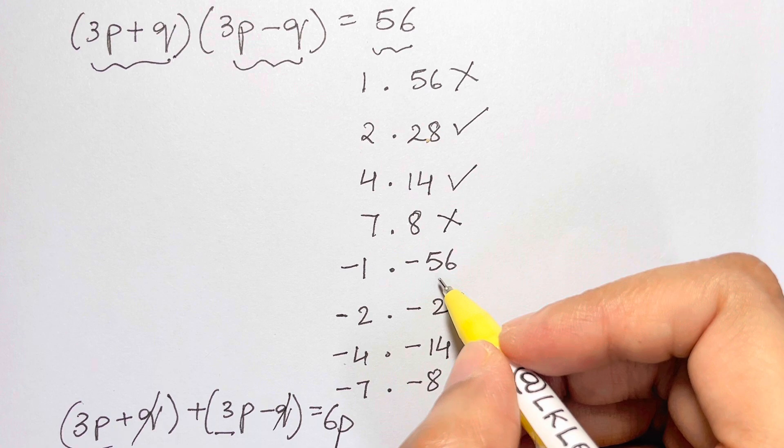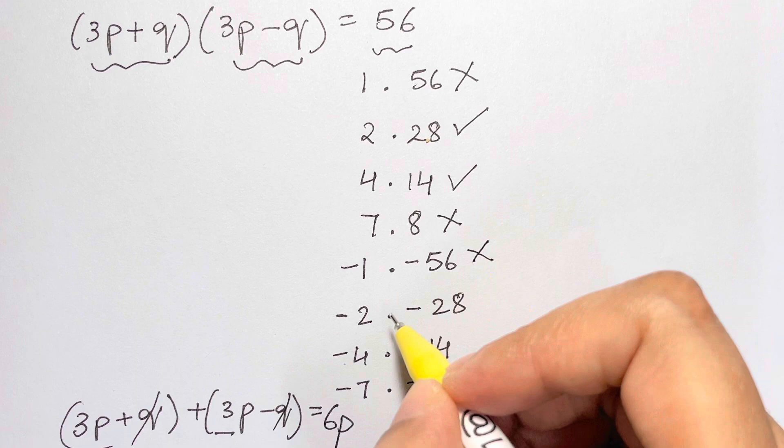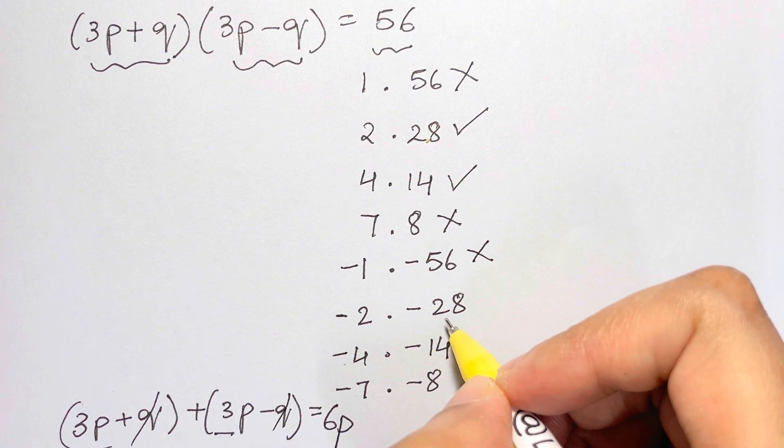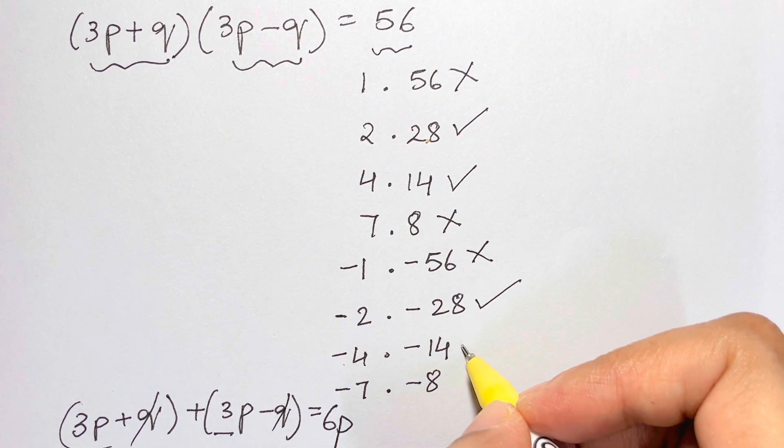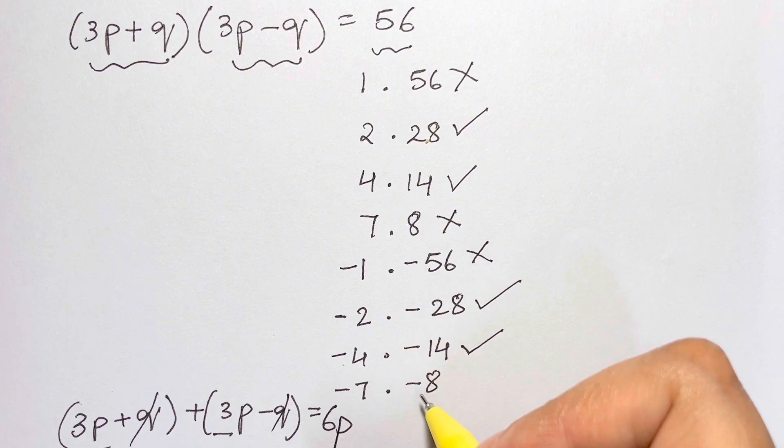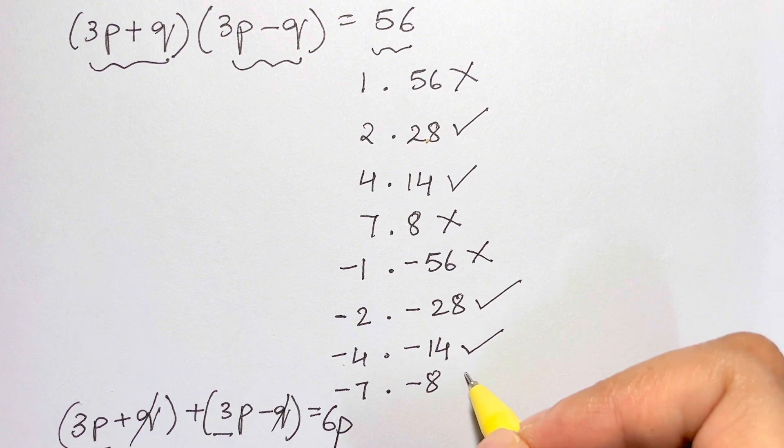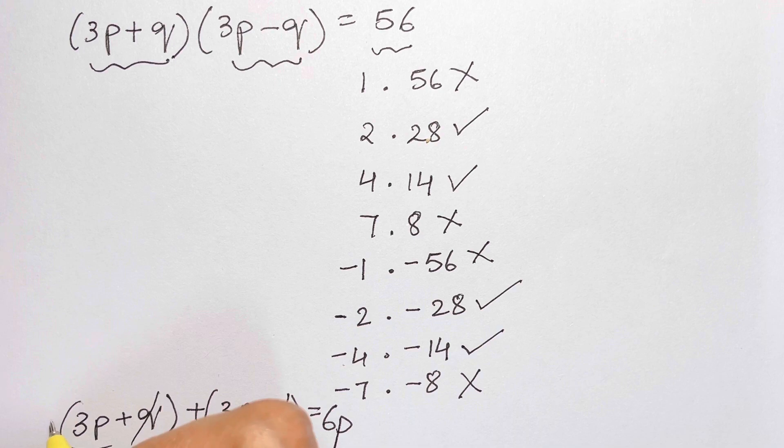-1 + -56 = -57, not a multiple of 6. -2 + -28 = -30, that's a multiple of 6. -4 + -14 = -18, that's a multiple of 6. -7 + -8 = -15, not a multiple of 6.